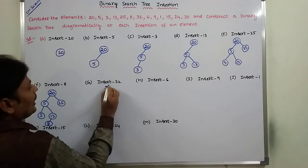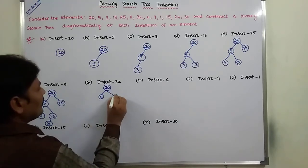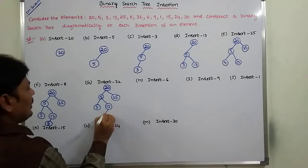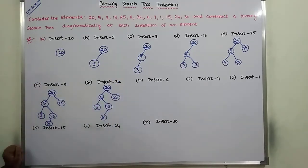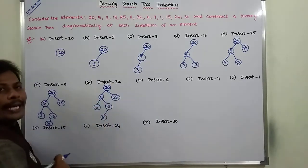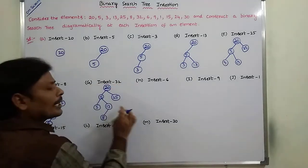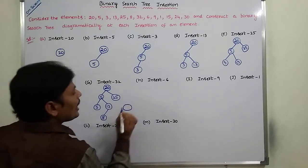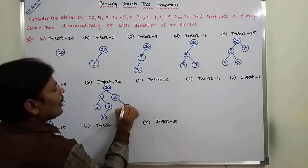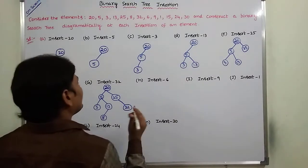Now I want to insert element 32. First, 32 is compared with root node value 20 — 32 is greater than 20, so go to the right subtree where 25 is there. 32 is compared with 25 — it is greater, so go to the right subtree. Here the right subtree is empty, so we create a new node and insert value 32. Now 32 becomes the right child of 25. This is the binary search tree after inserting element 32.